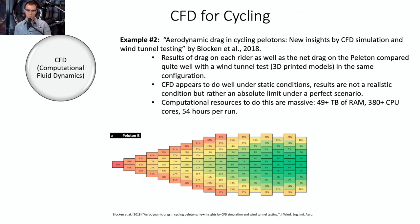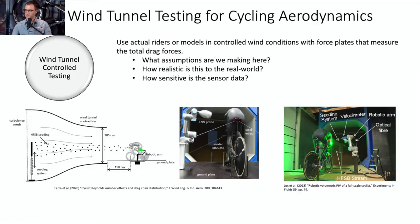The CFD appears to do well under static conditions, and the results compared well with wind tunnel tests of 3D printed models resolved to the same 50-micron scale. These results are not realistic to actual peloton dynamics — I would consider them an absolute limit, like the Betz limit for a cycling peloton. The aerodynamic drag in the middle of the peloton was about 6% of the front rider's drag — seemingly unrealistic, but these riders are all static, identical, and in a perfect configuration.